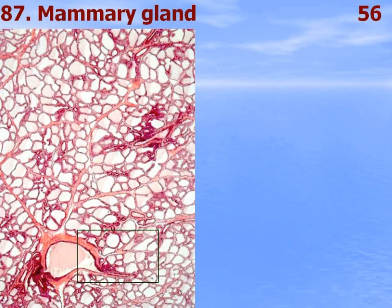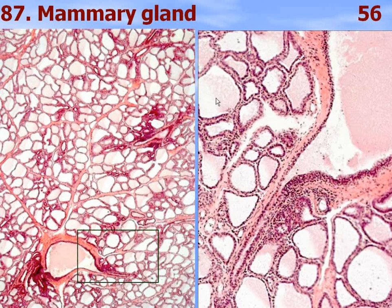Mammary gland — it is a parenchymal organ consisting of a capsule and loose connective tissue septa dividing the organ into lobules. The secretory portions are alveoli lined by simple columnar epithelium. Intralobular and interlobular ducts are lined by cuboidal stratified or stratified epithelium. Lactiferous ducts contain milk inside. Blood vessels are also visible.